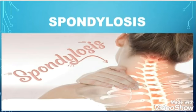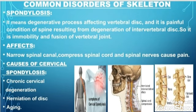The second skeletal disorder is spondylosis. Spondylosis means a degenerative process which affects the vertebral disc. As vertebral discs are affected, there is a fusion of the two successive vertebrae and there will be no movement. It is a very painful condition of the spine due to the degeneration of the intervertebral disc. Spondylosis is the immobility and fusion of the vertebral joint, because due to the absence of the intervertebral disc the vertebral joints fuse together and don't allow any type of movement.